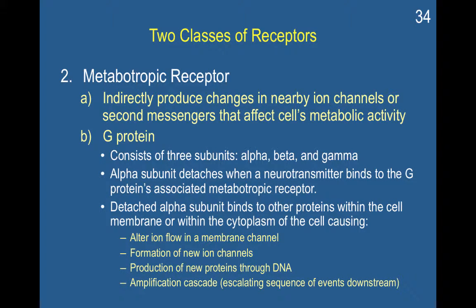This G protein consists of three subunits: alpha, beta, and gamma. An alpha subunit detaches when a neurotransmitter binds to the G protein. This detached alpha subunit binds to other proteins within the cell membrane or within the cytoplasm of the cell. One effect is that the alpha subunit can alter ion flow in a membrane channel by indirectly affecting a nearby ion channel.